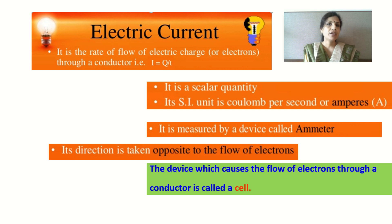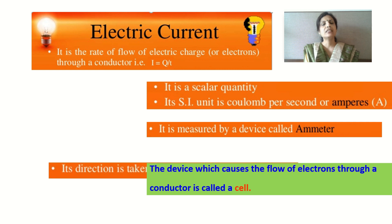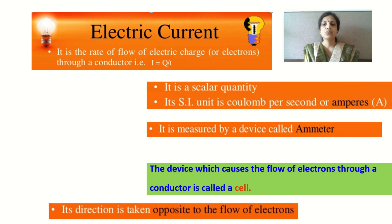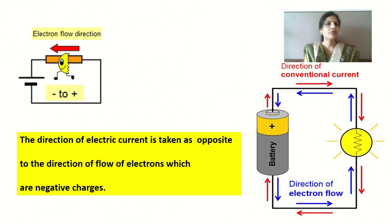One very important thing we learned is that the direction of electric current is taken opposite to the flow of electrons. With this figure it will be more clear. The direction of flow of electrons in an electrical circuit is from the negative terminal to the positive terminal of a cell.